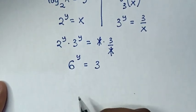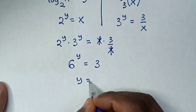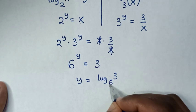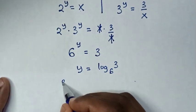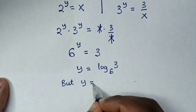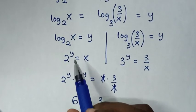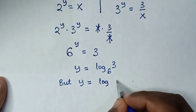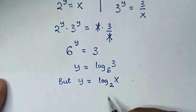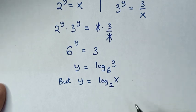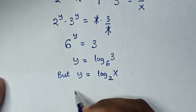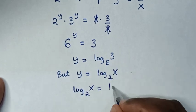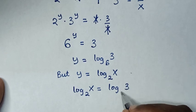To find the value of y: y equals log of 3 base 6. But we previously set y equal to log of x base 2. To find x, we compare these two equations, so log of x base 2 is equal to log of 3 base 6.